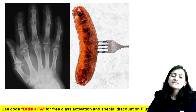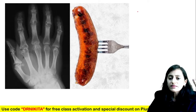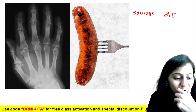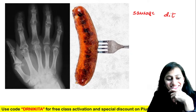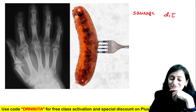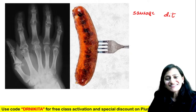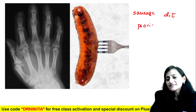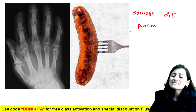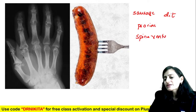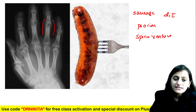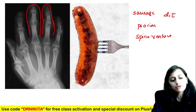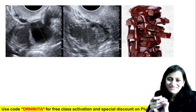Sausage digit — the swollen sausage-like finger. Sausage digit is seen with psoriasis. It can also be seen with dactylitis — in TB it is called spina ventosa. There is a lot of soft tissue swelling making the finger look swollen — sausage digit in psoriasis and spina ventosa.